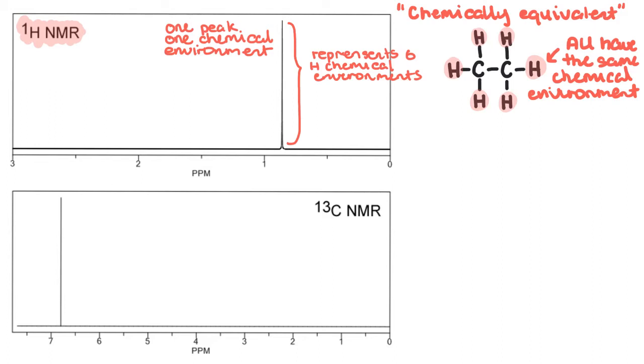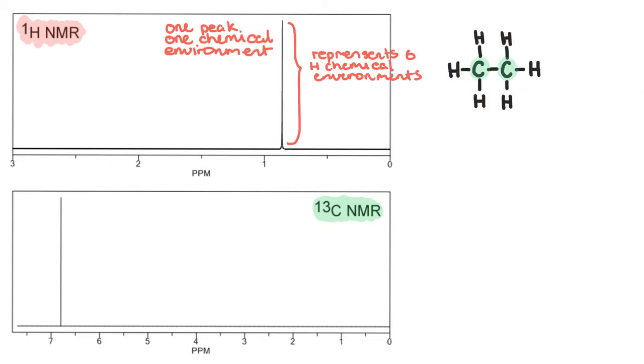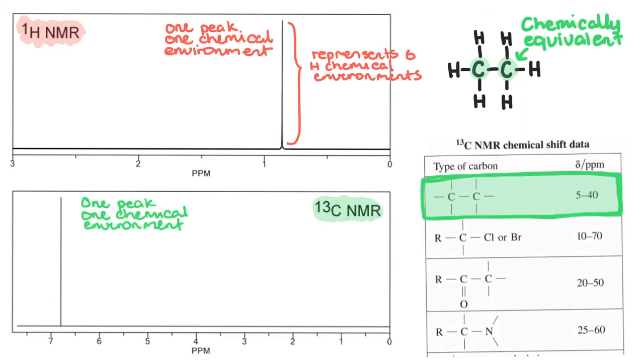The one we tend to focus on, however, is the carbon NMR. So thinking about electron shielding around the different carbon atoms, they're both the same. So you'd expect one large peak. In fact, your data sheet shows it to be around 5 to 40 parts per million on a CNMR.